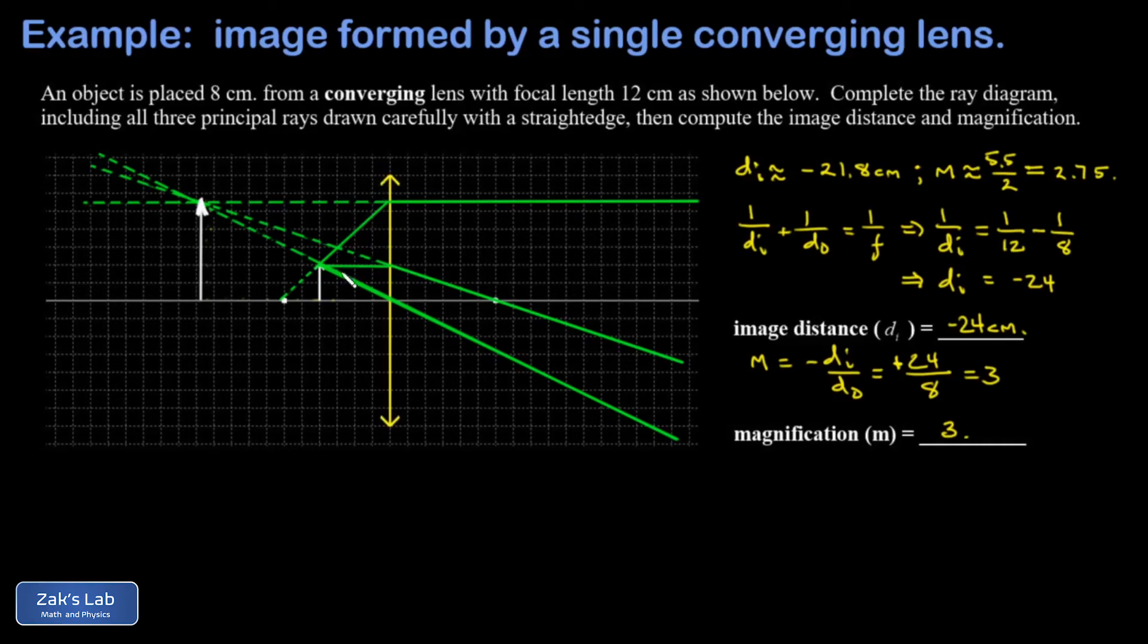And it also reminds us of physically what's going on as these diverging rays from the head of the object produce a virtual image on the same side of the lens.